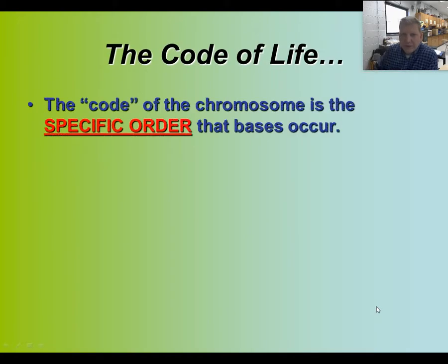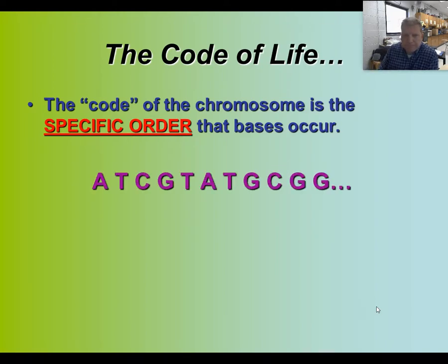The code of life: the code of the chromosome is the specific order in which the bases occur. For example, a strand of DNA might read A, T, C, G, T, A, T, G, C, G, G — that sequence of bases carries genetic information.